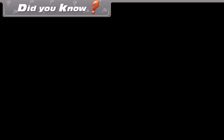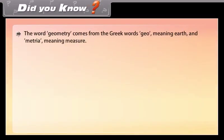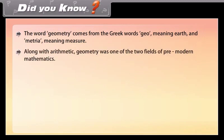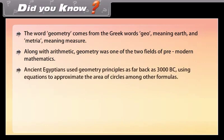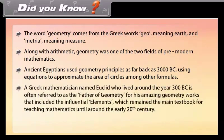Did you know? The word geometry comes from the Greek words geo meaning earth and metria meaning measure. Along with arithmetic, geometry was one of the two fields of pre-modern mathematics. Ancient Egyptians used geometry principles as far back as 3000 BC, using equations to approximate the area of circles among other formulas. A Greek mathematician named Euclid, who lived around 300 BC, is often referred to as the father of geometry for his work including the influential Elements, which remained the main textbook for teaching mathematics until around the early 20th century.